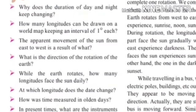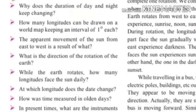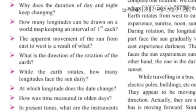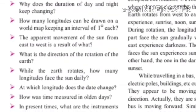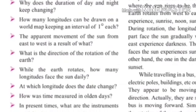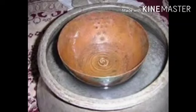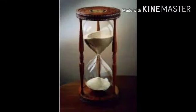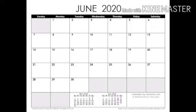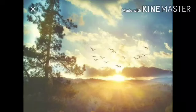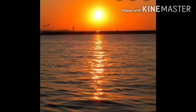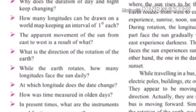How was time measured in olden days? Instruments like Ghatikapatra, sand clock, calendars, etc., and natural events like sunrise, noon, and sunset were used to measure time in olden days.